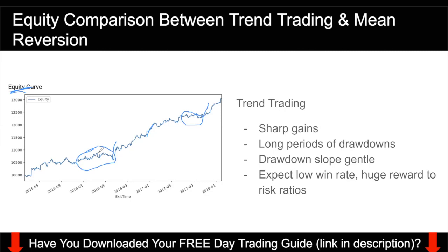Imagine you started trading at around the fifth month of this equity curve. You realize that for four months your account is just going down — it's going nowhere. Your drawdown is relatively gentle because you are betting a small amount each trade, but nonetheless it's four months of losing money and drawdown. Can you take that? You have to ask yourself that question. Are you a person who, after taking a series of losing trades, gives up and doesn't want to trade anymore? If that's you, then chances are trend trading isn't for you, because this is what you need to expect.